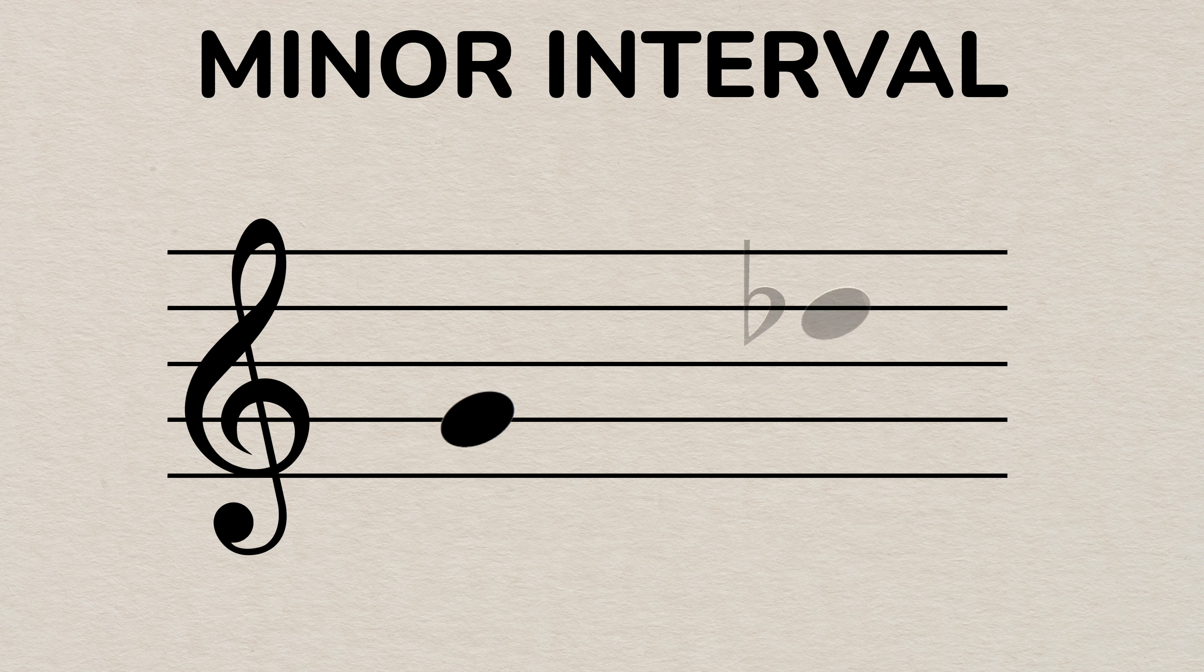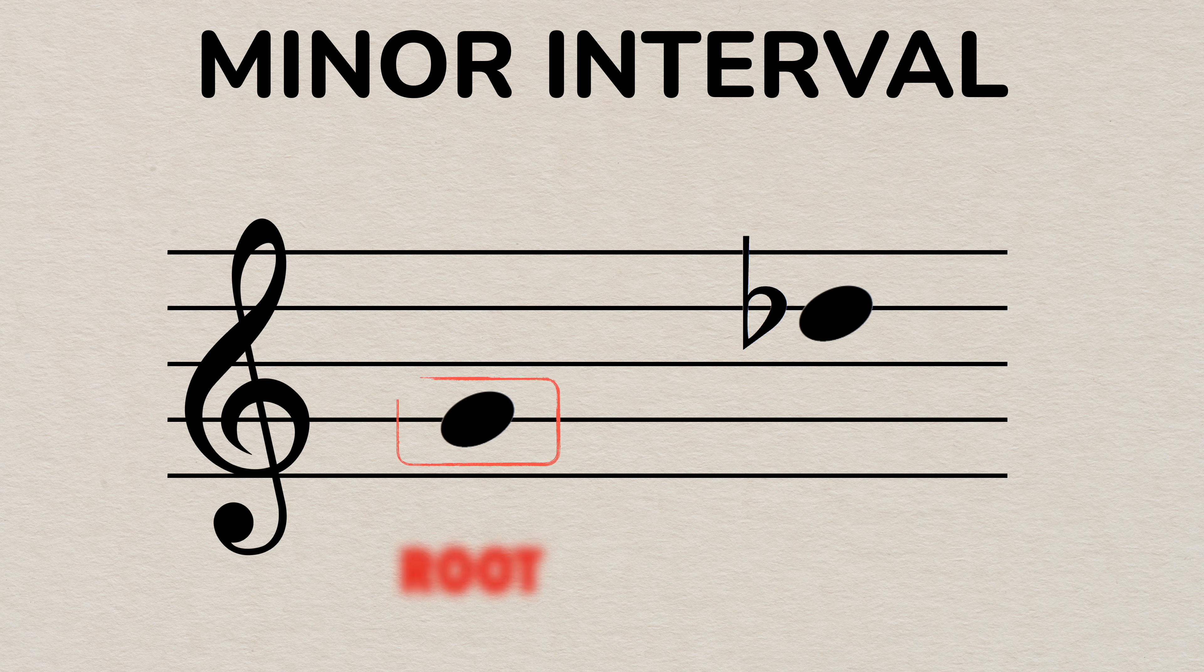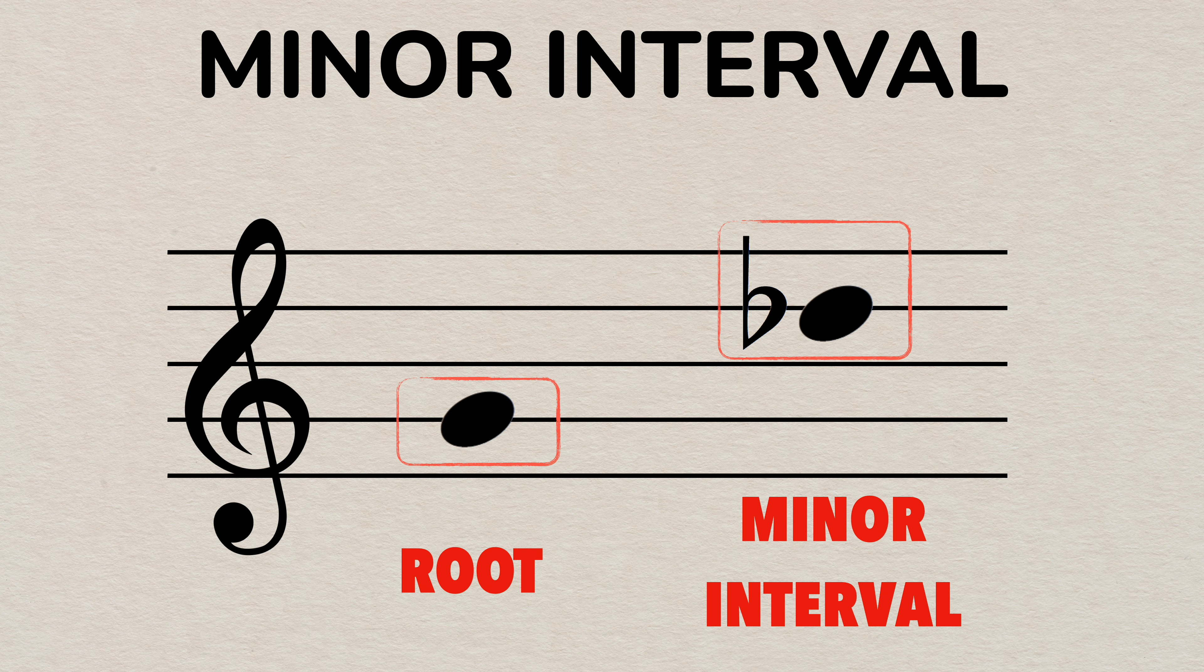The minor interval is made of two notes, the root note and the minor interval note. A minor interval note is one semitone or half step smaller than its corresponding major interval.